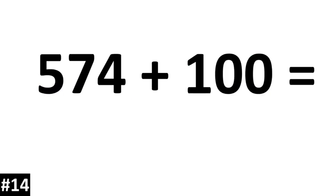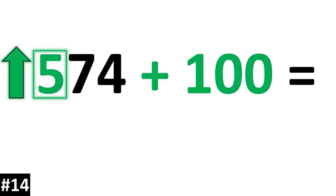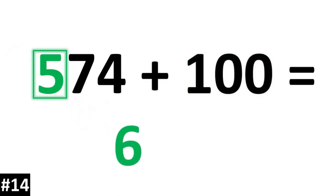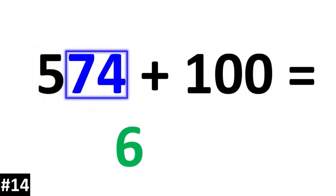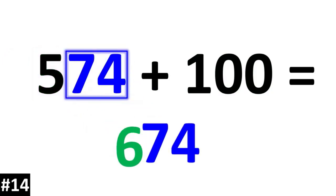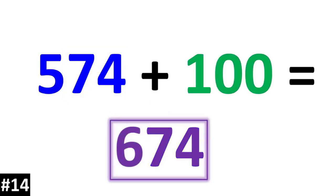574 plus 100. 574 has a hundreds digit of 5. So if we add another 100, that 5 goes up to 6. The other numbers stay the same, and we have 674.